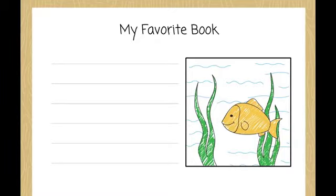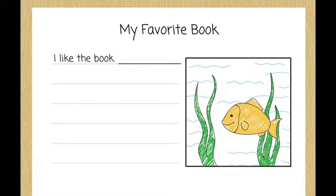Then, Evie wants to give her opinion about the book. Her teacher gives her this sentence to finish: I like the book. Evie finishes the sentence by telling her teacher, I like the book, Go Fish Go.